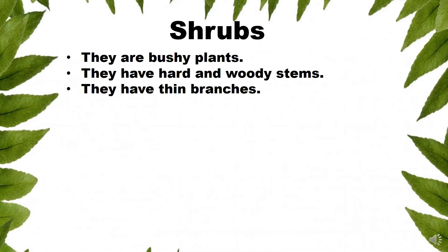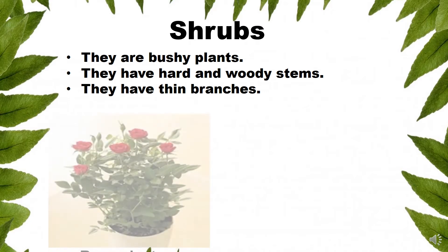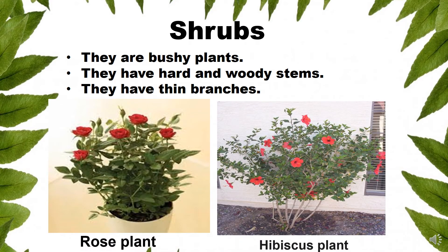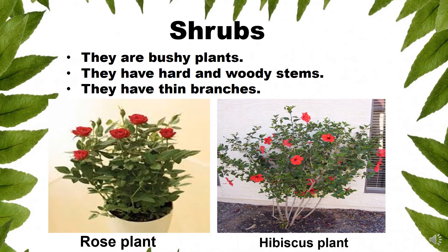Shrubs — they are bushy plants. They have hard and woody stems and thin branches. For example, the rose plant and hibiscus plant.